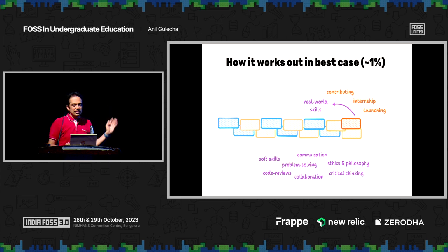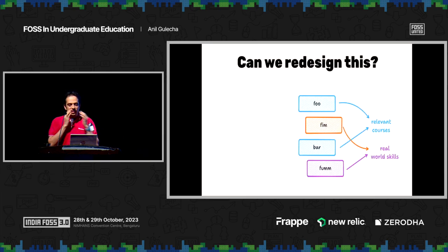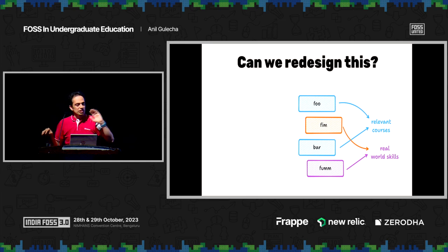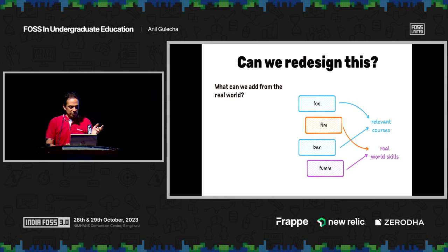Now, if you had to drastically improve — if you could wave a magic wand and re-implement it from scratch — how would you do it? So let's redesign it. First, remove all of the more non-relevant courses. Keep your data structures, operating systems, keep them as is. And replace the other ones with real-world content all the way. Why wait till the last semester? Take them right from the first semester itself.